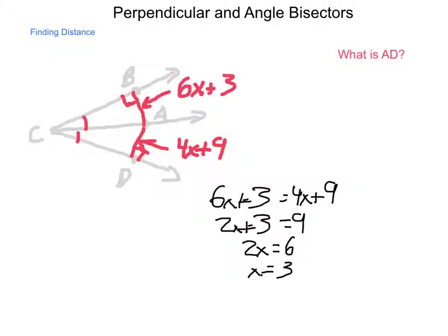So, again, I have solved the equation for this variable x, but I have not answered the question. The question being stated is, what is AD? So, I need to take this and substitute it back in to the expression for AD, telling me that 4 times 3 plus 9 is equal to length AD, multiplying that gives me 12 plus 9, which is 21. So, that is my solution to the question that was being asked.